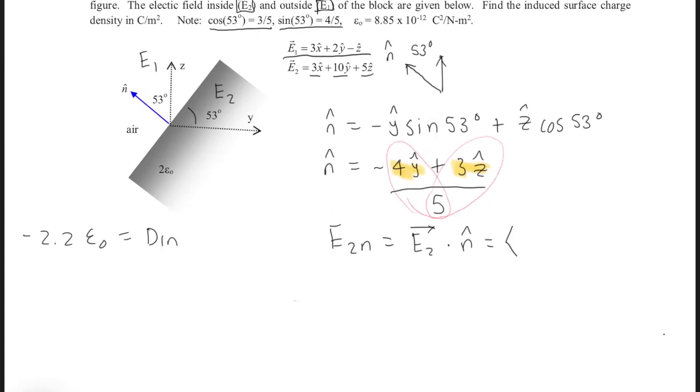So 3, 10, 5. And that gets dotted with the n̂ vector, which is 0, -0.8, and 0.6. By doing the dot product here, our E2n, our electric field 2 with respect to n, would create a scalar, -8 + 3, which is -5.